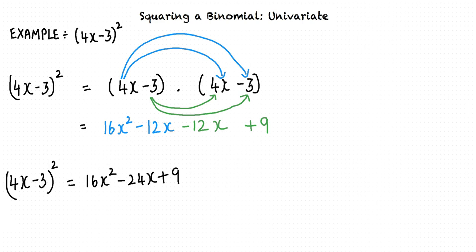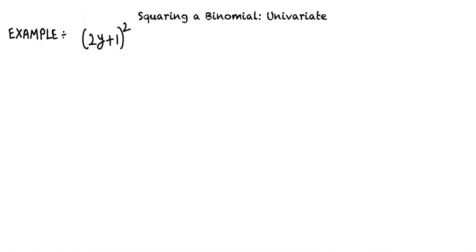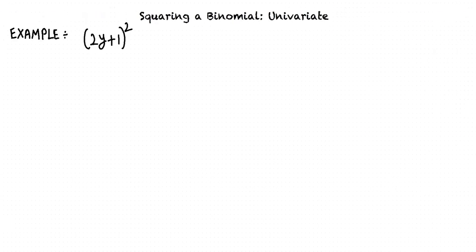Thus, we obtain that 4x minus 3 whole square equals 16x squared minus 24x plus 9. Let us consider another example.